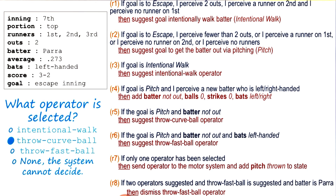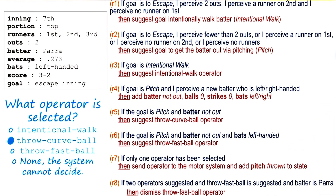We decided that if a fastball is suggested, which it was, and if two operators are suggested, which they were, and the batter is para, which it is, then to dismiss the throw fastball operator. That means we only have one more operator suggested — throw a curveball — so that would be selected.